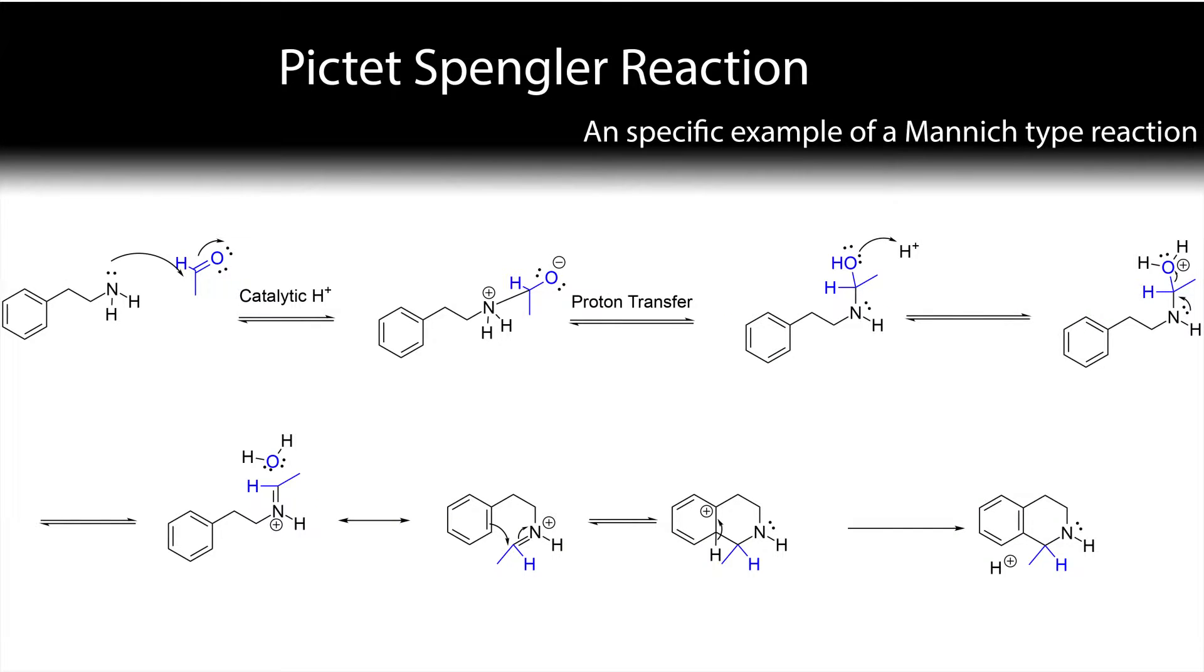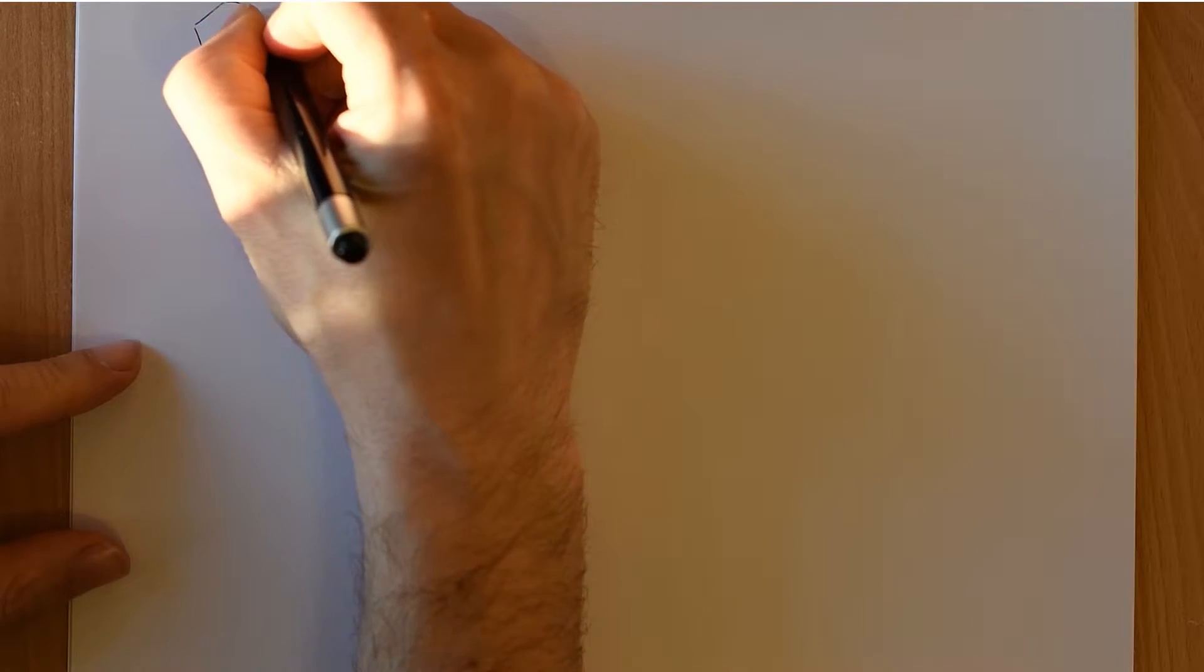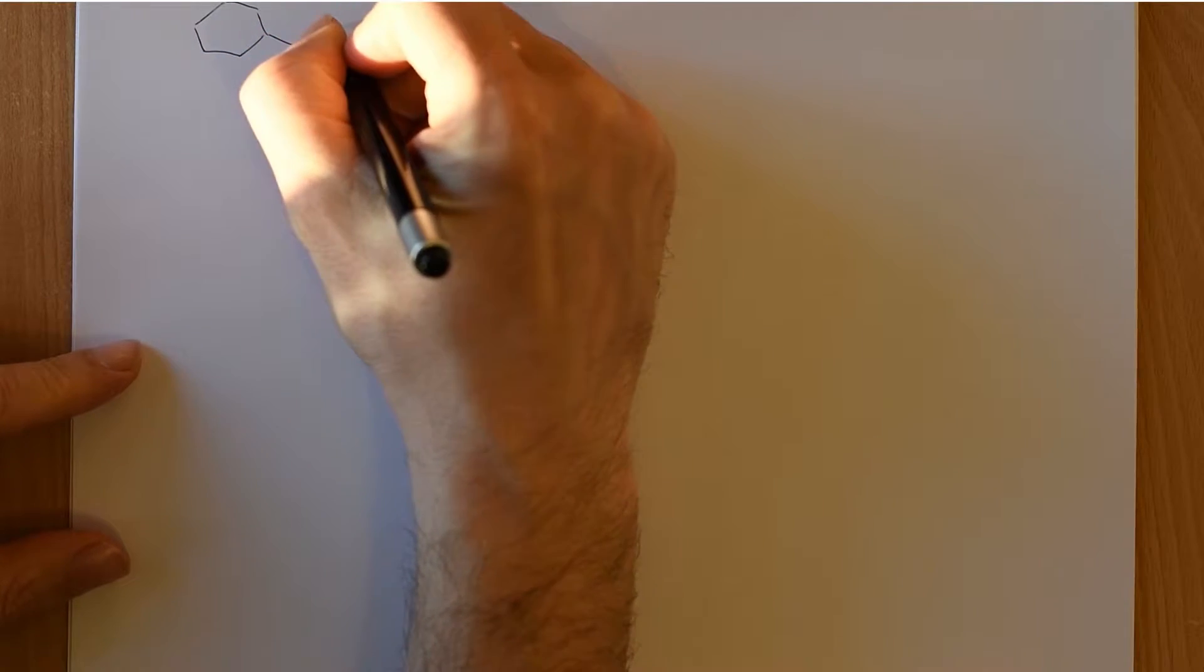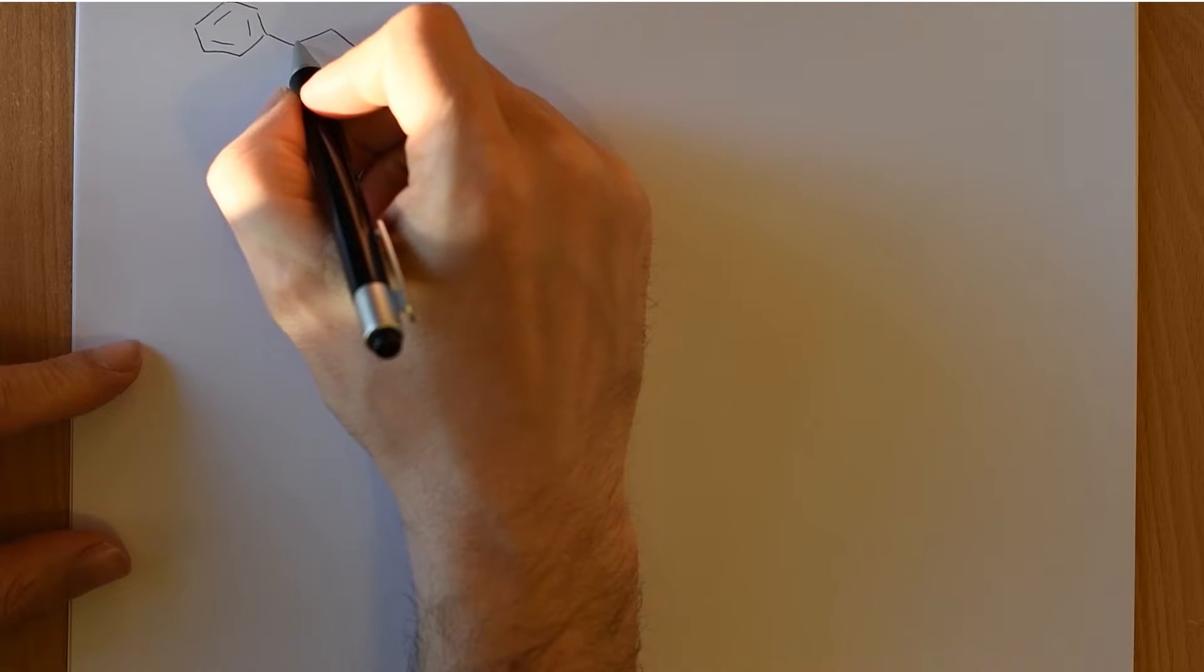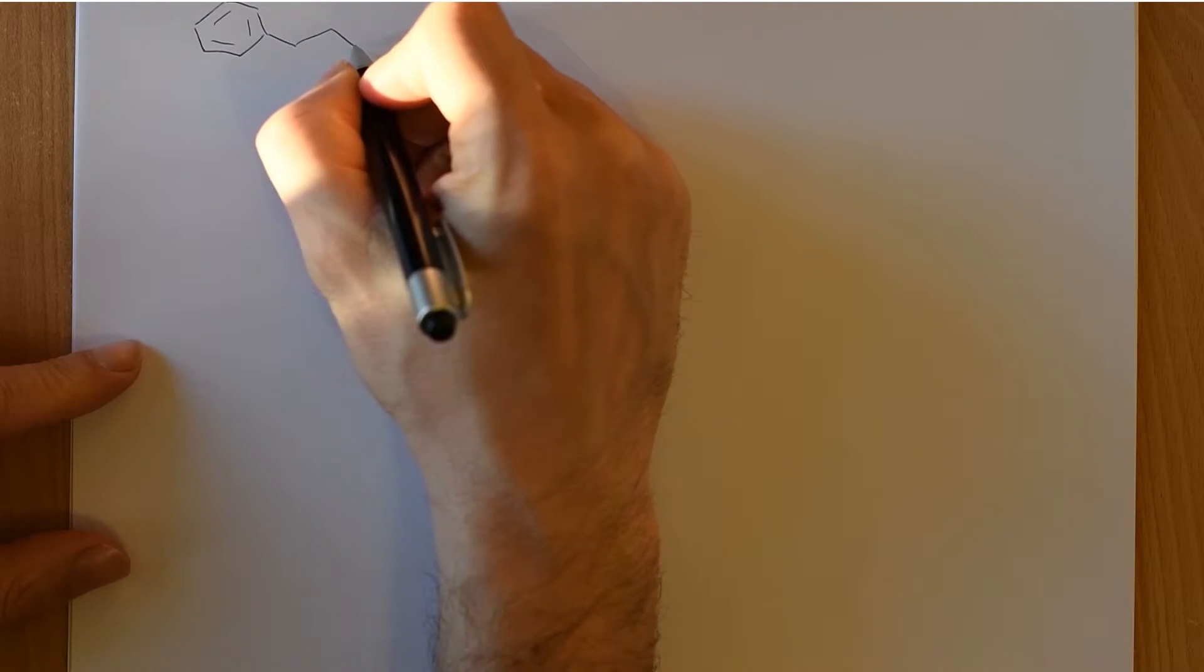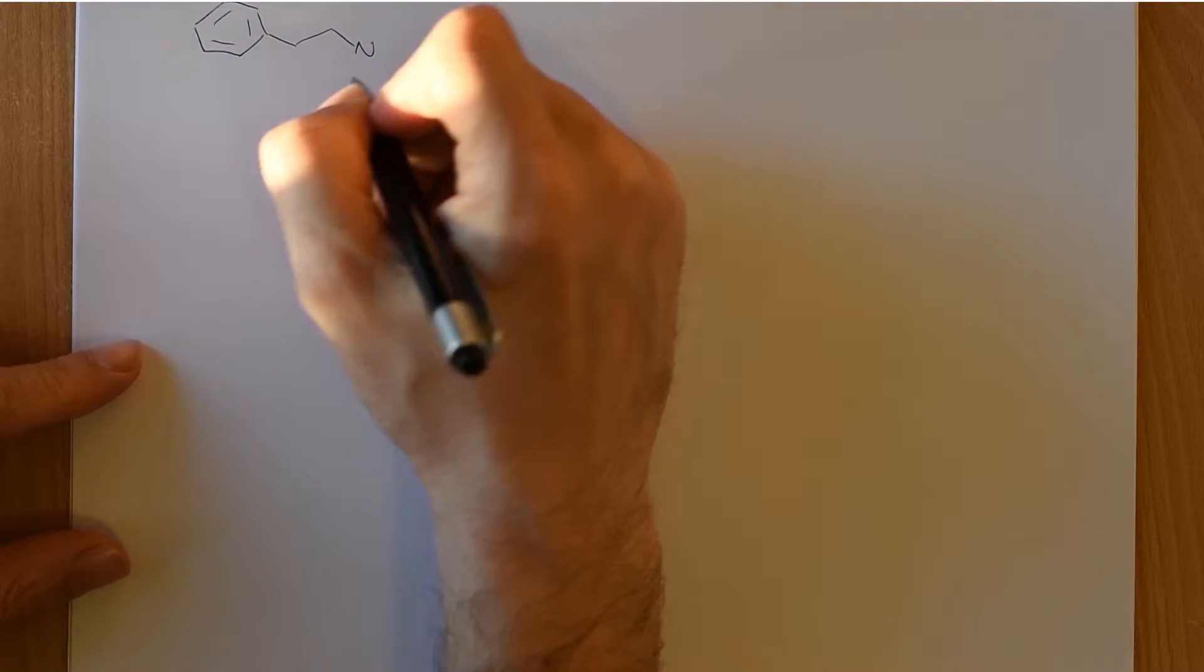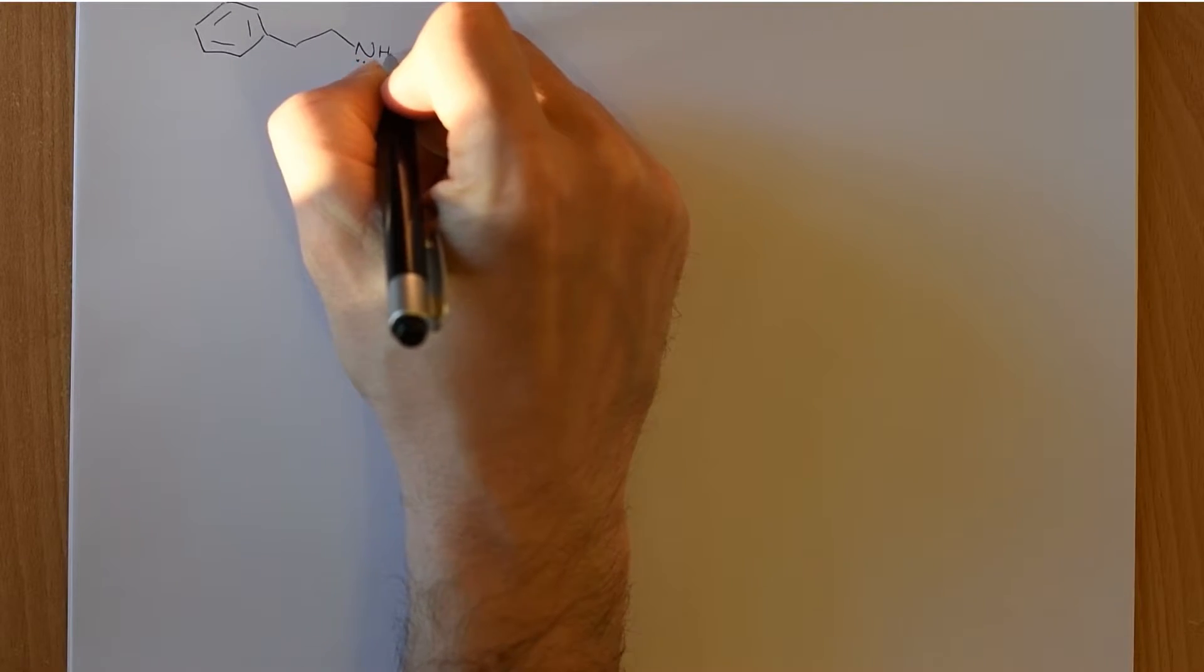The Pickett-Spengler reaction is a particular variety or variation of the manic reaction and it occurs between an aryl group, so an aromatic ring that is attached to an alkyl group and on the beta carbon it has a nitrogen, a primary amine.